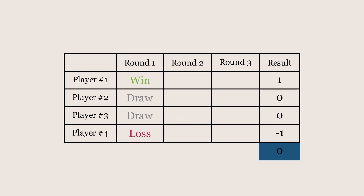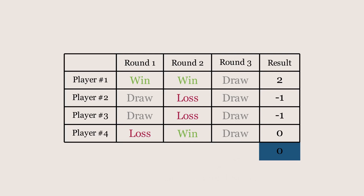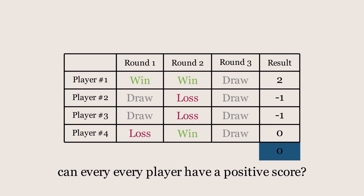All of this is not unique to the first round. For any round, if a game ended decisively, then the point gained by the winner will be balanced by that of the loser, while draws have no effect on the result. Thus the sum will always be 0. And so, for the question of whether every player can have a positive score, the answer is no — for if they did, the total sum of their scores would be positive and not 0.